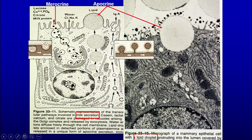We also have budding, seen in milk secretion. For protein secretion in milk, you have merocrine secretion — regular exocytosis. But fat is not water soluble, so to release fat you release part of the cell membrane around it. The cell membrane is discharged along with the fat — this is called apocrine secretion, where part of the apical cytoplasm is included in the milk fat secretion. Merocrine is just regular exocytosis where the vesicle fuses with the membrane.